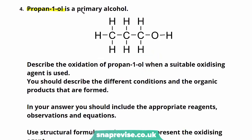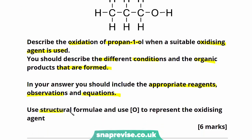Question four: propan-1-ol is a primary alcohol. Describe the oxidation of propan-1-ol when a suitable oxidizing agent is used. You should describe the different conditions and the organic products that are formed. In your answer you should include the appropriate reagents, observations and equations, use structural formulae, and use an O in square brackets to represent our oxidizing agent. This question is worth six marks. We're asked to talk about the oxidation of propan-1-ol and the different products formed when different conditions are used.